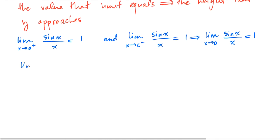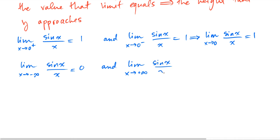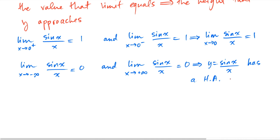We see that the limit as x approaches negative infinity of sine x over x approaches 0. And also on the right, as x approaches positive infinity, the limit of sine x over x is equal to 0. This means that the graph of y equals sine x over x has a horizontal asymptote of y equal to 0.